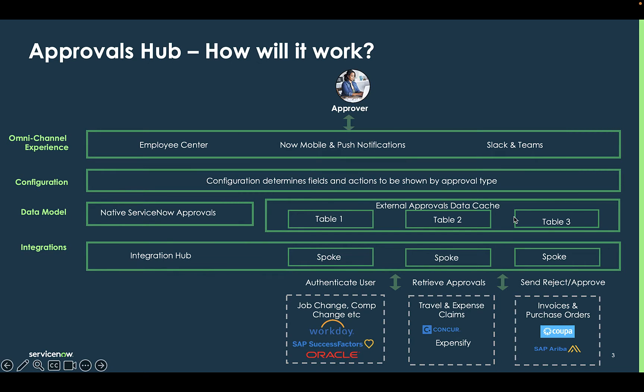There are four main layers when it comes to implementing Approvals Hub. The first layer is the integration layer. This is where it leverages the existing Integration Hub framework and spokes to build integrations with third-party applications. We have two pre-built integrations out of the box — one with Concur and one with Workday — but the framework is there to build to other systems.